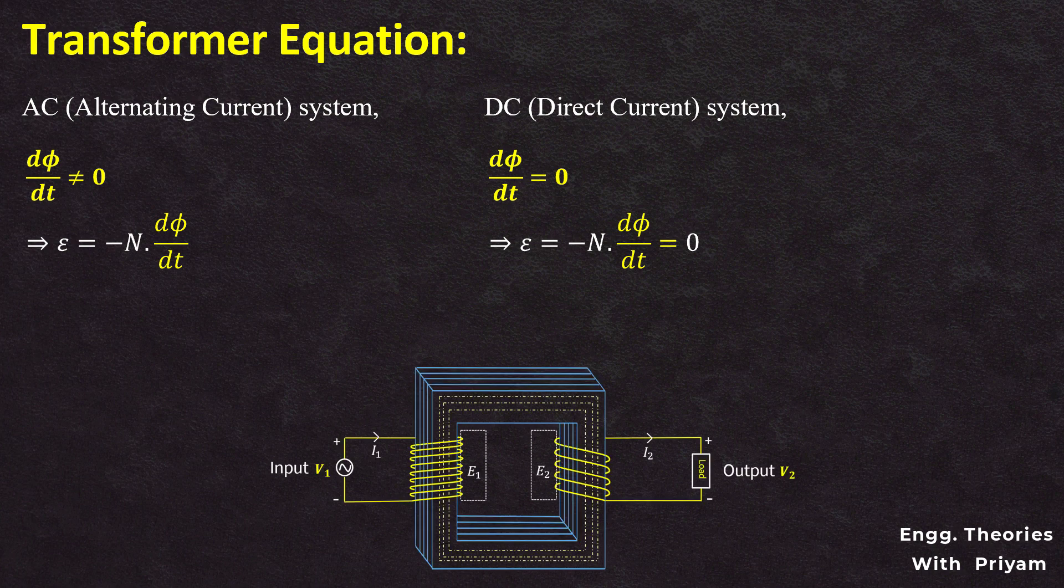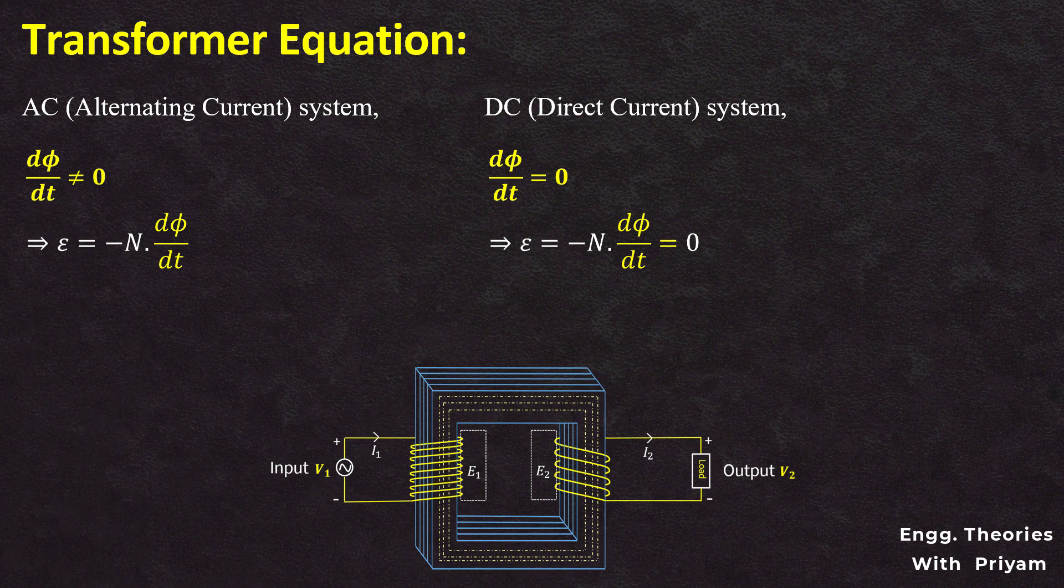If there is no induced EMF in either of the primary or secondary winding, electrical power cannot be transferred between the two circuits.